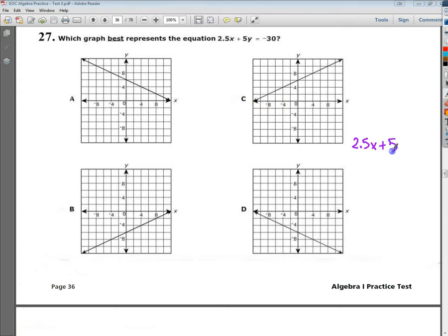What I end up with is 2.5x equals negative 30. I'm going to divide by 2.5. So I can say that the place in which my line intersects with my x-axis would be at negative 12.